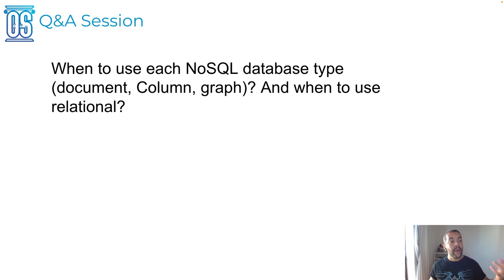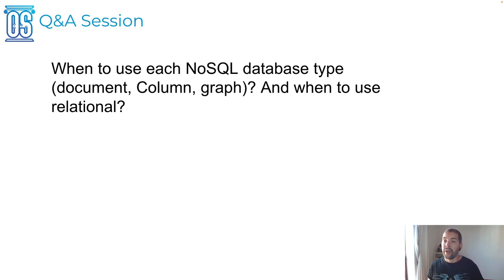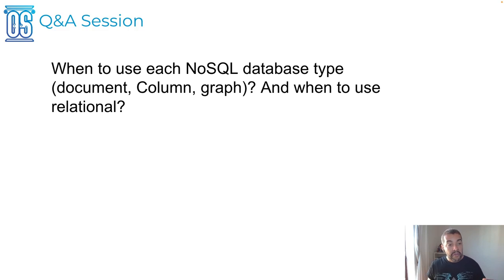The last question for today is: when to use each NoSQL database type — document, column, graph, key-value, time series — and when to use a relational database. I have a video covering that, but briefly: key-value for sessions and cache and things like that; column to store events, logs, and so on; document for any unstructured information or mobile APIs, especially because document databases in general are schemaless. And graph for fraud detection, recommendation engines, and so on.